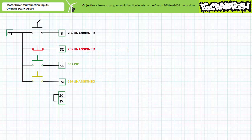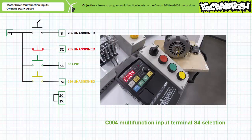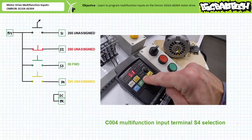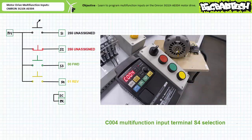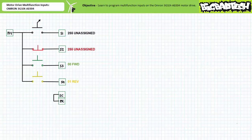Let's enhance the functionality of this current system by adding a reverse mode to input 4, the normally open yellow push button. Navigate to communication parameter C004, multi-function input 4 selection. Press mode. As anticipated, it is currently in the 255 unassigned function. Decrement to 01, reverse, and press enter to save it. This motor drive has now been programmed to recognize input 3 as the initiation signal for forward operation and input 4 as the initiation signal for reverse operation. This simple functional reassignment really highlights the utility of motor drives — we didn't have to rewire it, just a couple simple taps on the keypad.